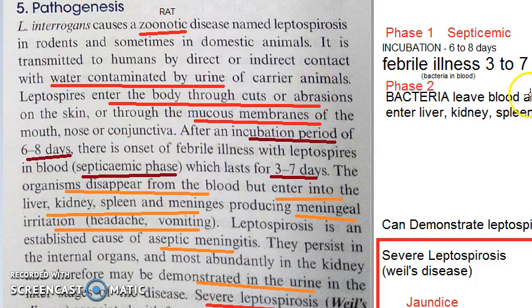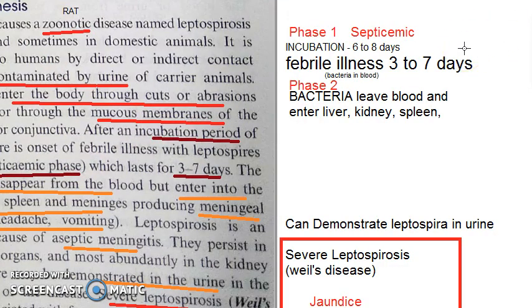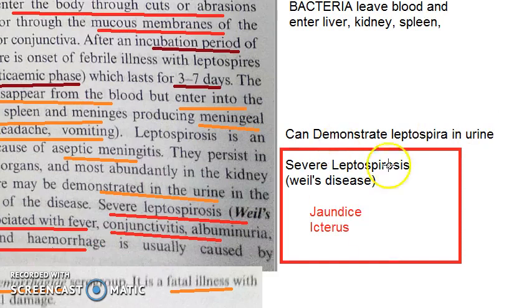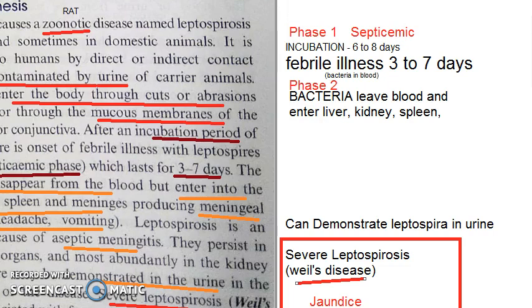Coming to the pathogenesis, there can be two forms of this disease: a mild form and a severe form. In the severe form, it is called Weil's disease. Please note, this severe form is the one which is called Weil's disease.